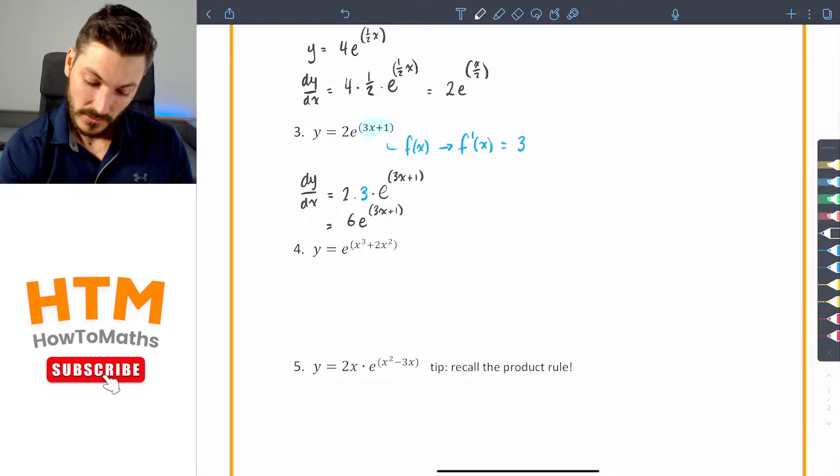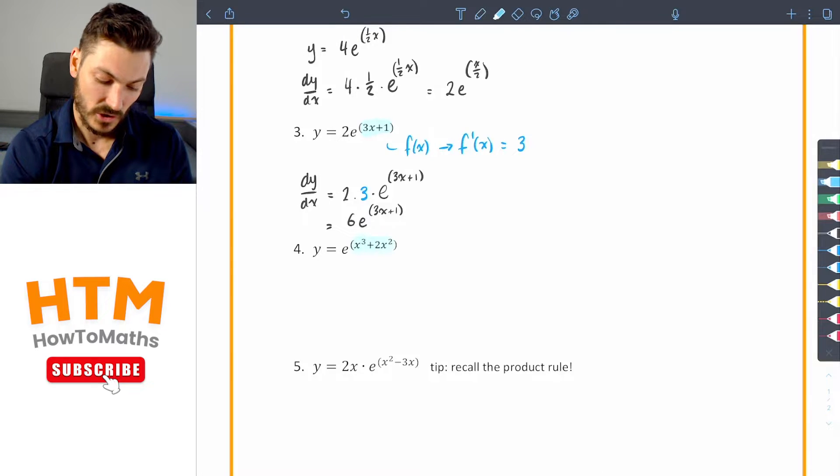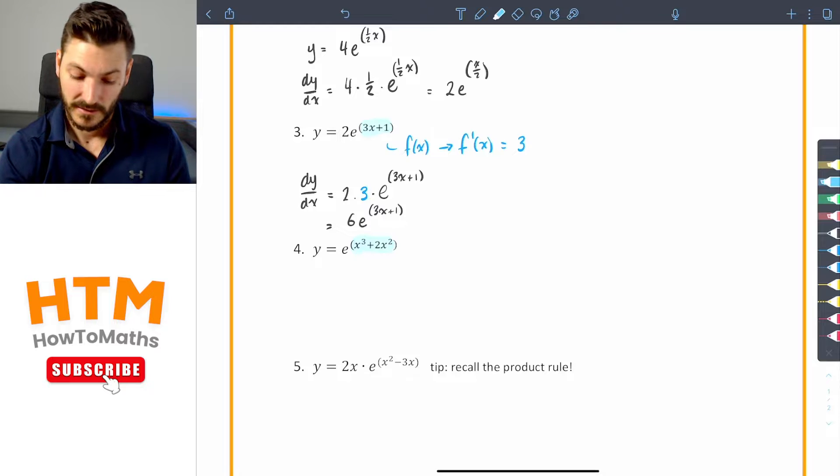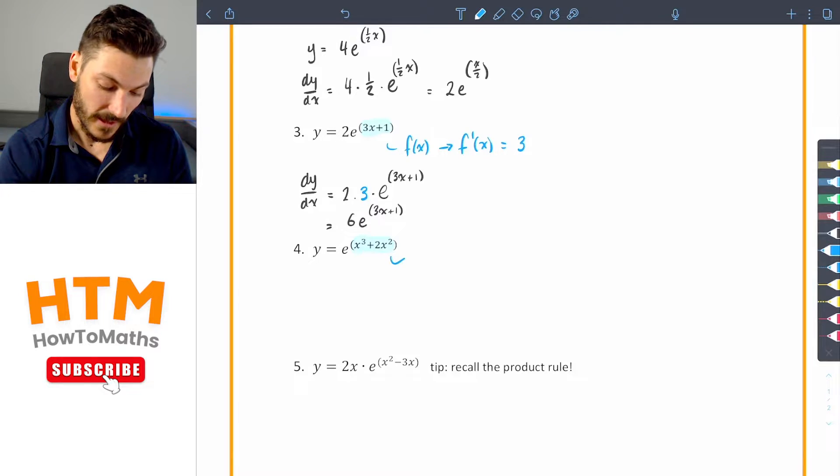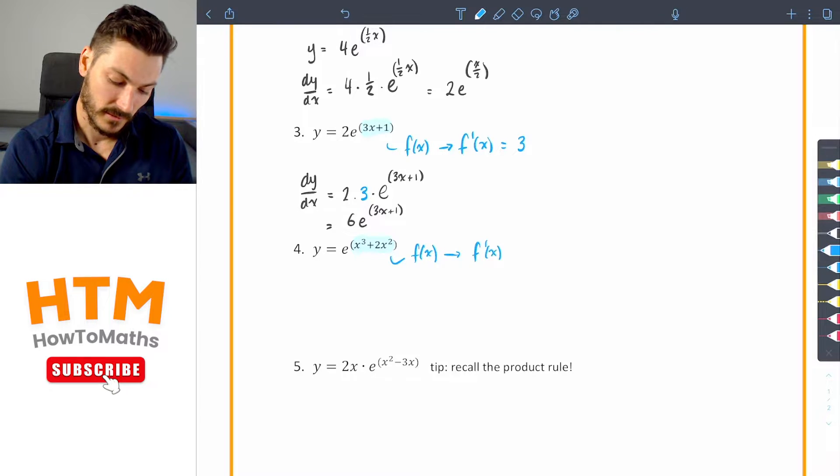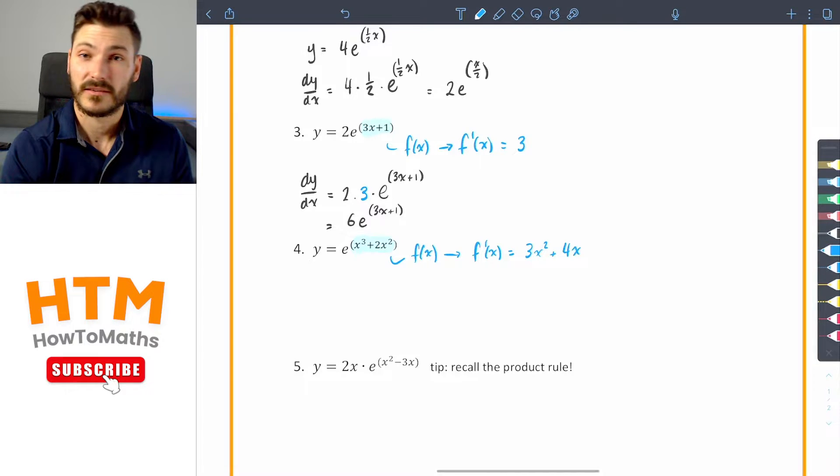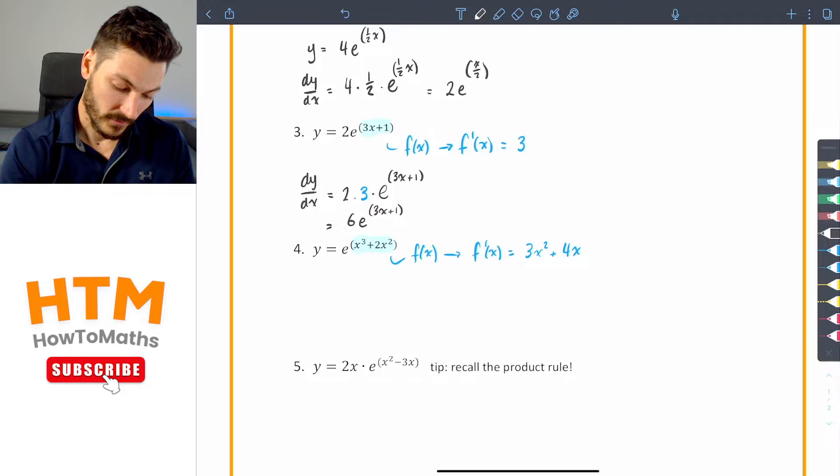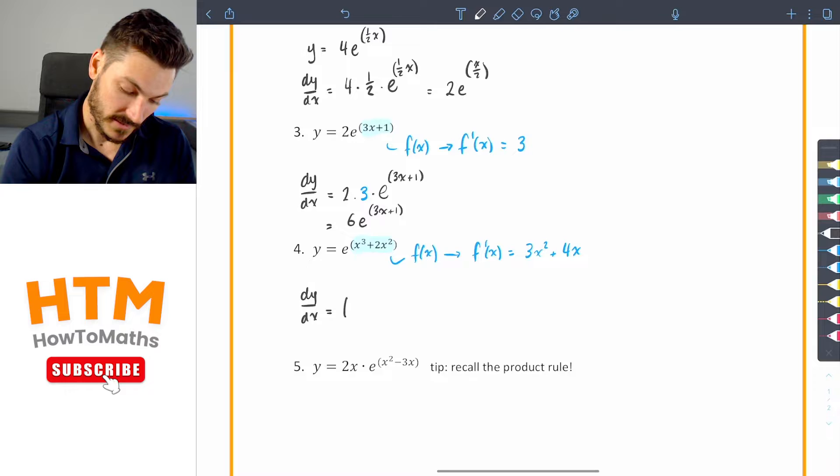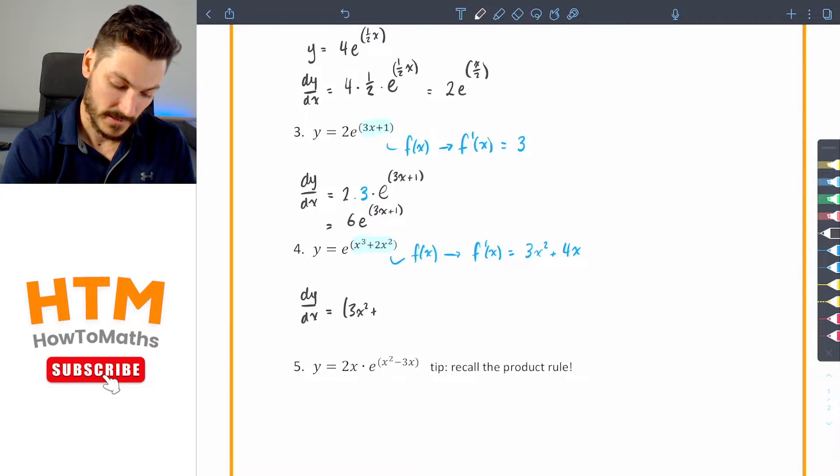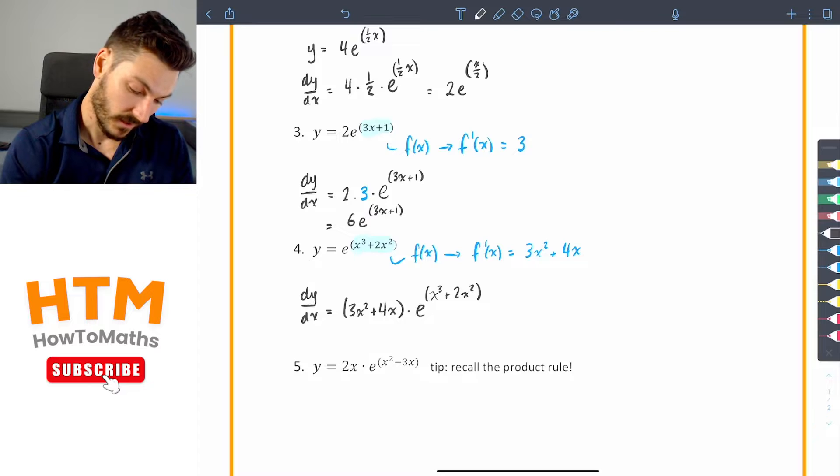On to question four. We're going to do similar. We're going to say x cubed plus two x squared is our function of x. So I'm going to call that f of x. And therefore the derivative of that is going to be three x squared plus four x, the two times two. So I've got dy dx is equal to three x squared plus four x, the derivative, times by e to the original x cubed plus two x squared.